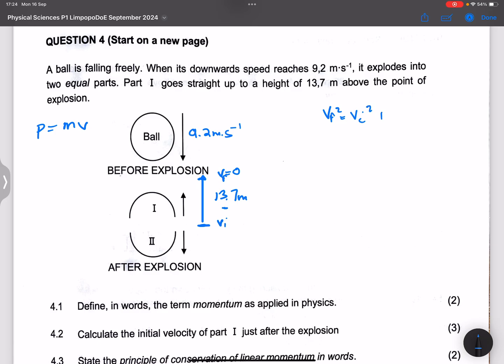The final velocity is zero, so that's zero squared. Our initial velocity is what we're looking for.